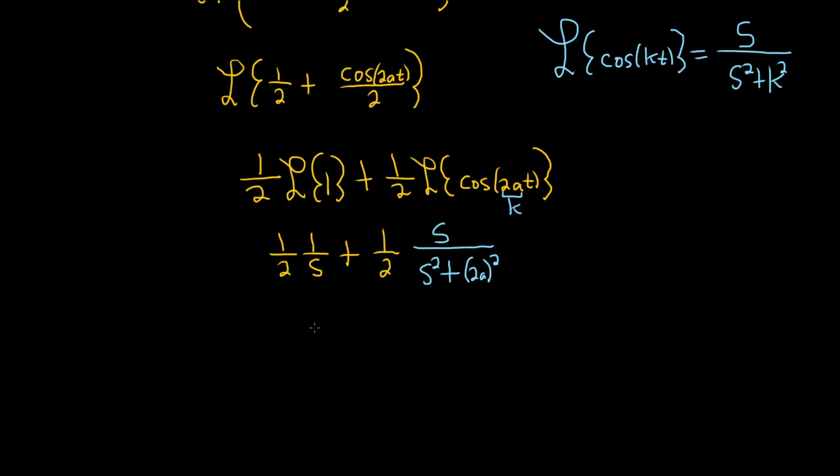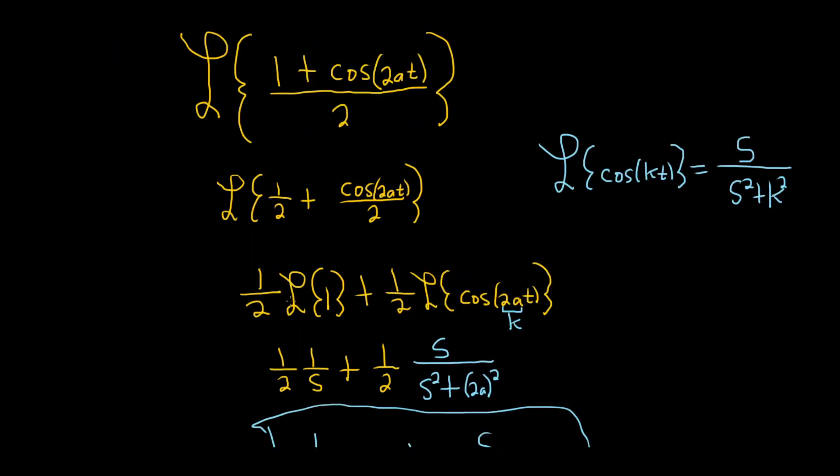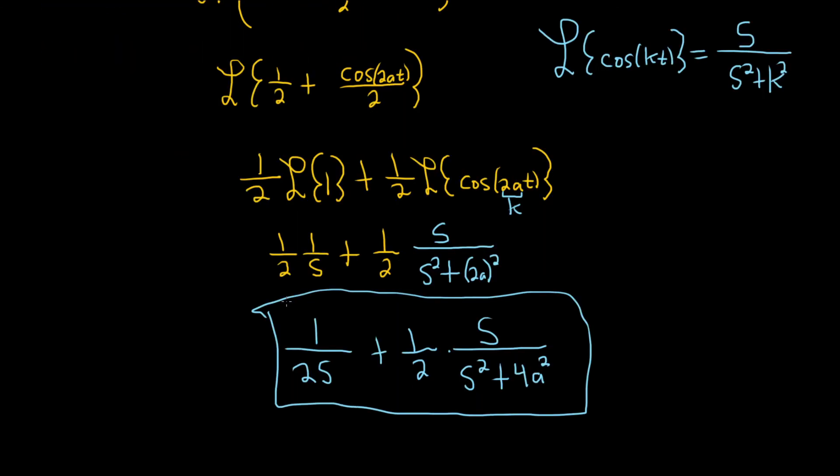Let's clean this up. This is 1 over 2s plus, I'm going to leave this 1 half outside, 1 half times s over s squared plus, and squaring each of these gives us 4a squared. And that's how you find the Laplace transform of cosine squared of at. I hope this video has been helpful.